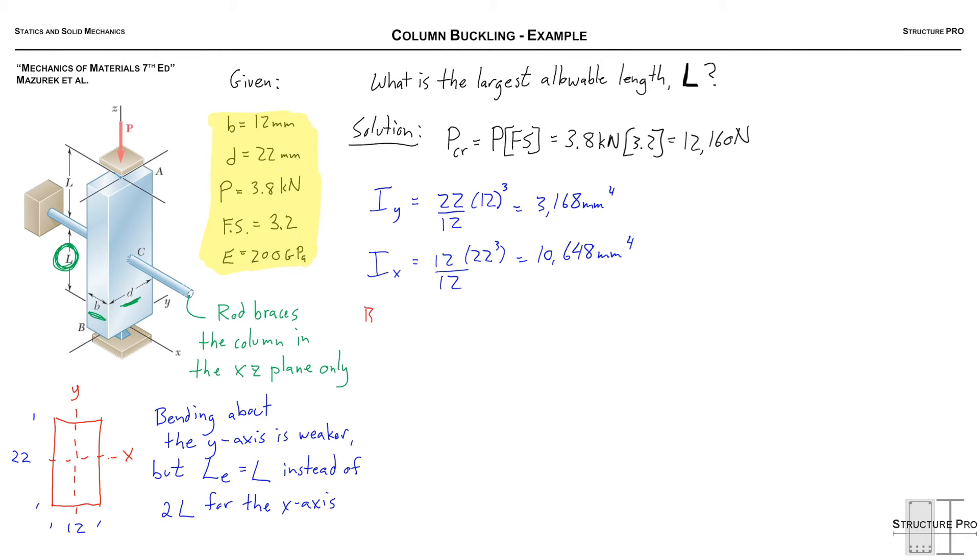Okay so now is a good time to actually write down our equation so that we know which puzzle pieces we're trying to bring together to solve this. So the buckling formula and that is P critical equals pi squared EI over L squared.